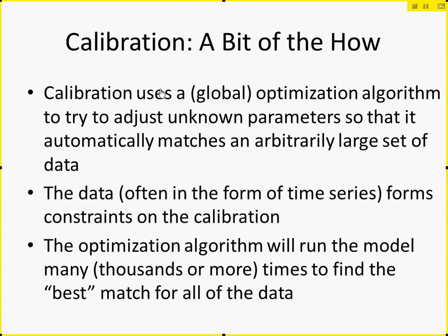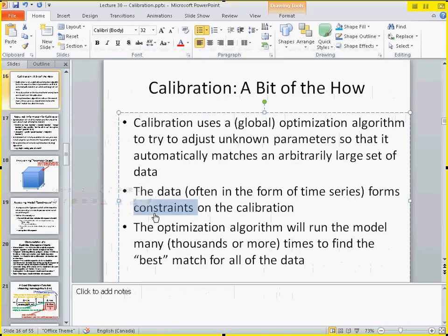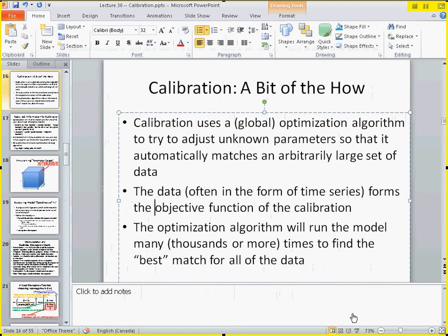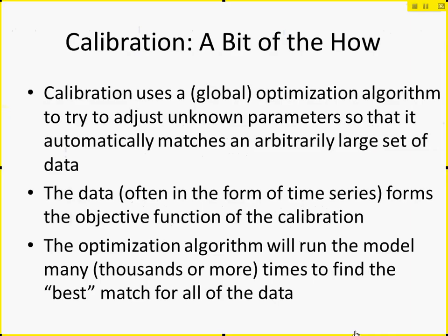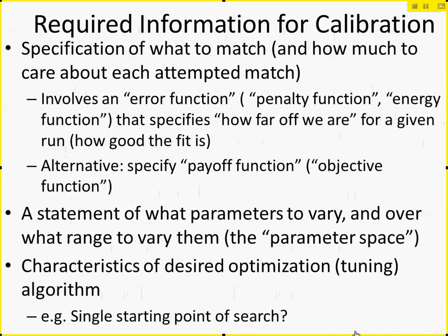The optimization algorithm will run the model thousands or more times to find the best match for all the data. We have parameter ranges — say from 0 to 1 for a prevalence we may be adjusting — and those form the constraints. The data defines the objective function of the calibration. So here we're going to be adjusting the parameters to best match things, and this optimization algorithm is going to help with that.